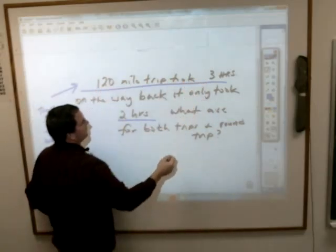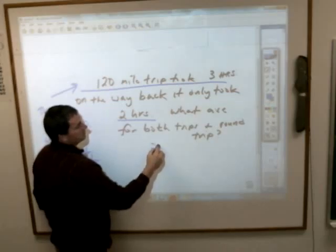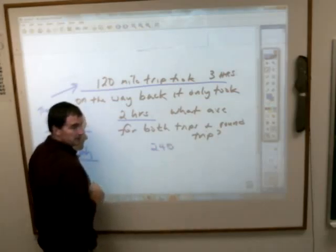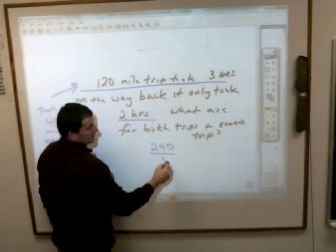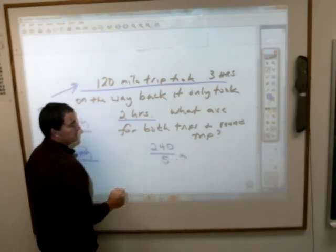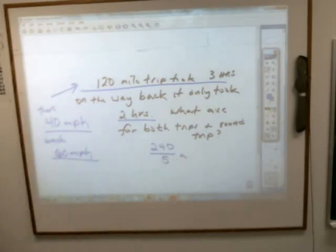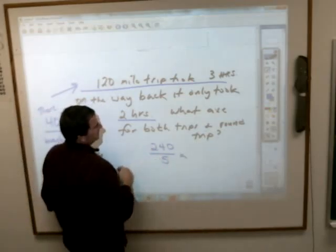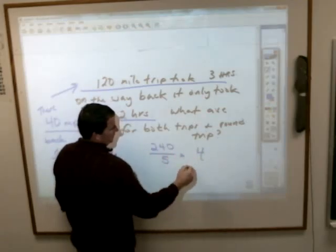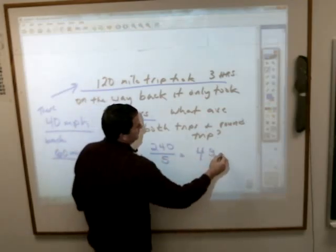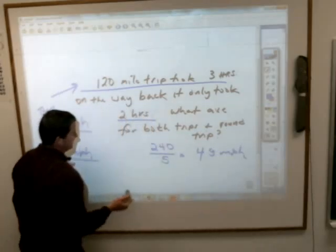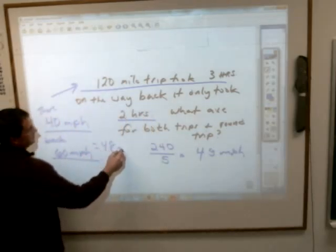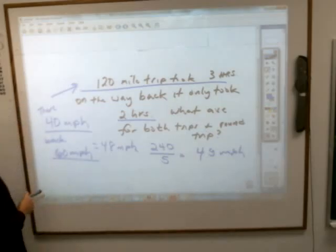But let's verify: 120 miles in three hours plus 120 miles in two hours means 240 total miles in five total hours. Divide 240 by 5 and you get 48 miles per hour — not 50. So the average for the round trip is actually 48 miles per hour.